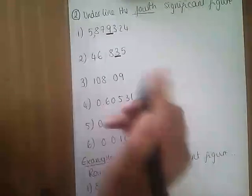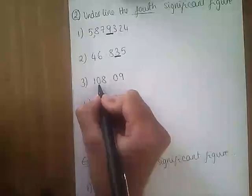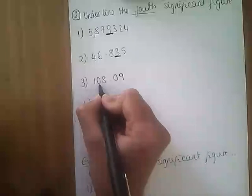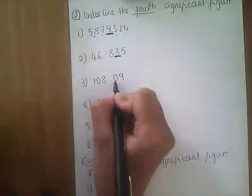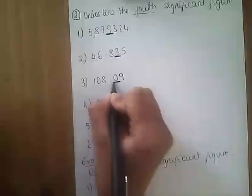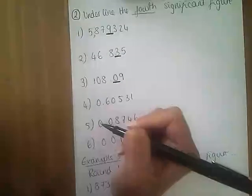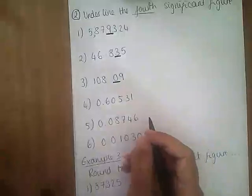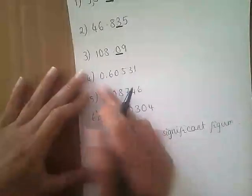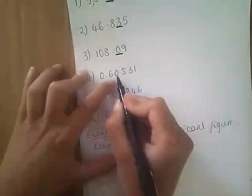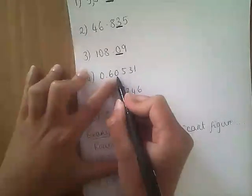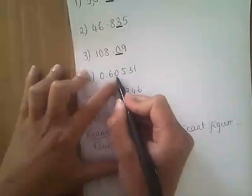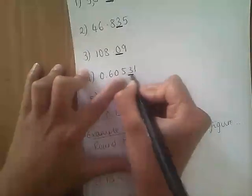Question three: the first significant figure — that zero is your second because it's after another number, so that counts. Counting one, two, three, four — that zero counts because it's after other numbers, so that zero is your fourth significant figure. Number four: that zero doesn't count because it's at the beginning of a number, so our first significant figure is the six. The zero does count because it's after another number — first, second, third — and that number three is our fourth.